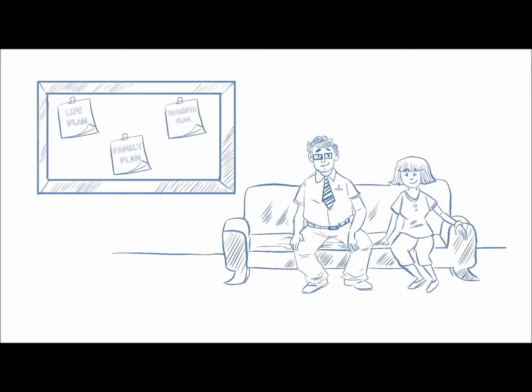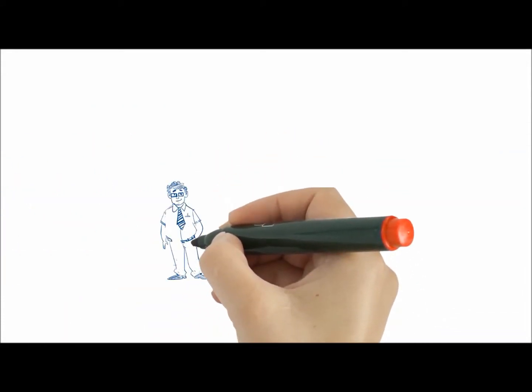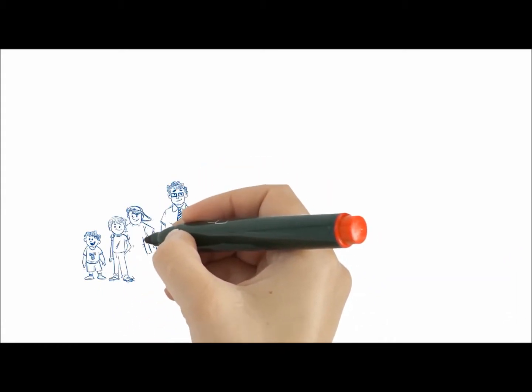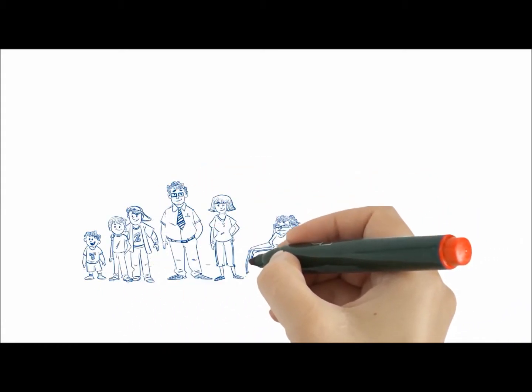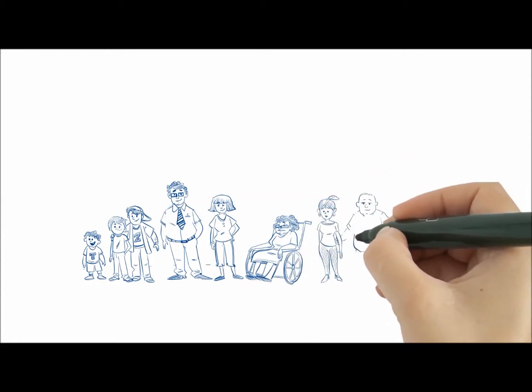It should also include a family plan, leaving everyone on the same page, avoiding family conflicts, and leaving values, not just assets, and most importantly, leaving someone as the guardian for the kids and grandma in their absence.